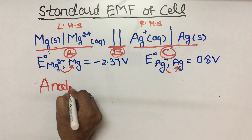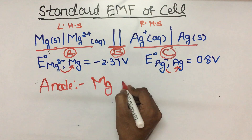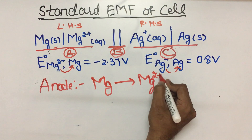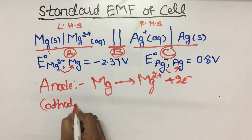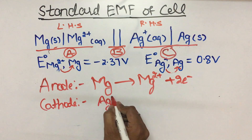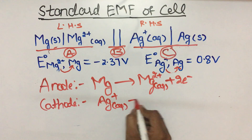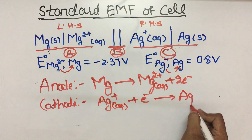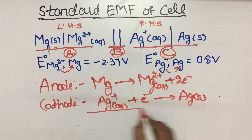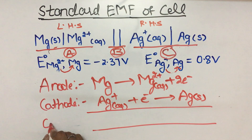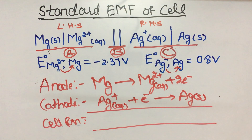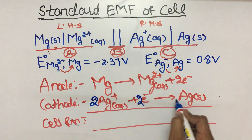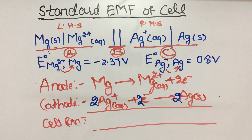Now we can write the anode and cathode reactions. The anode reaction: Magnesium loses 2 electrons to form Mg2+ plus 2 electrons. The cathode reaction: Ag+ ions, which are always aqueous, gain one electron to form Ag solid.